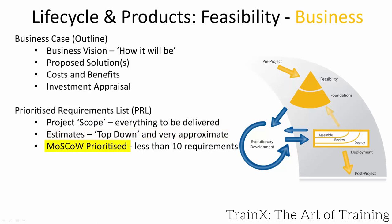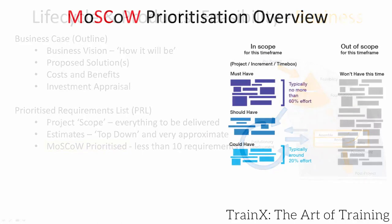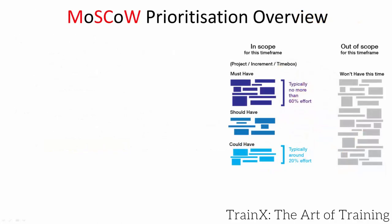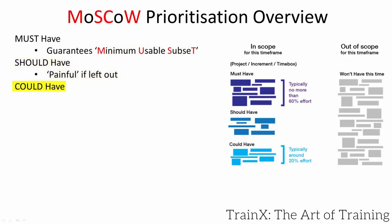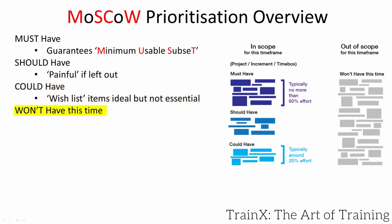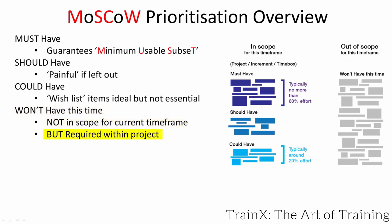MoSCoW prioritisation is utilised throughout the agile world. M denotes must — anything prioritised as a must that isn't present invalidates the value of the solution; a car must be drivable, as an example. If all the musts are met, the result will have value and is called the minimum usable subset. S stands for should — shoulds that are missing mean there is some pain in using the product. Could indicates a best-case nicety. Won't have for now can exclude an idea that isn't required but keeps reoccurring during meetings.